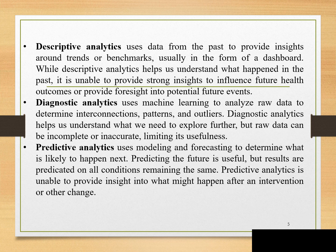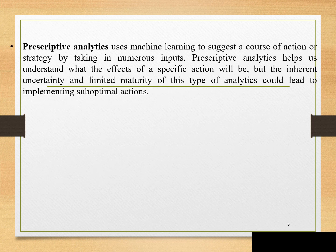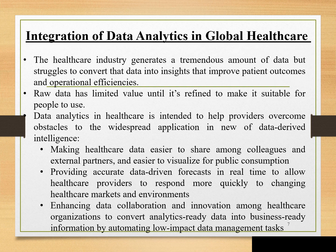Predictive analysis helps determine what is likely to happen in the future, but it is unable to provide insight into what might happen after an intervention or particular changes. Prescriptive analysis suggests a course of action or strategy to be followed, helping to understand the effects of a specific action, though the inherent uncertainty and limited maturity of this analytics type can lead to implementing suboptimal actions.